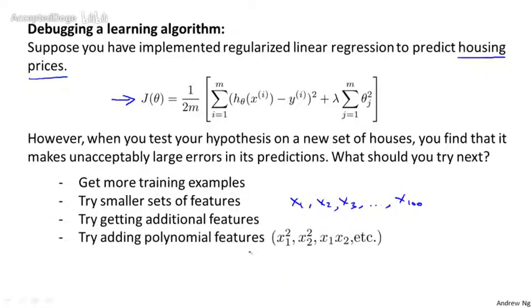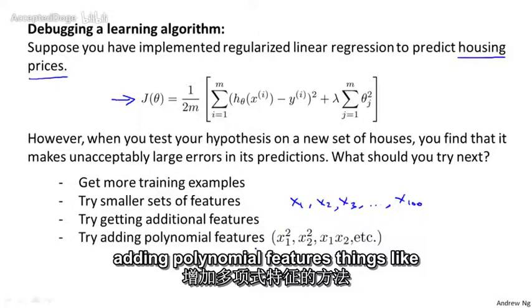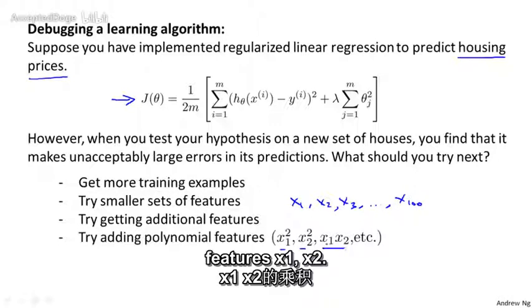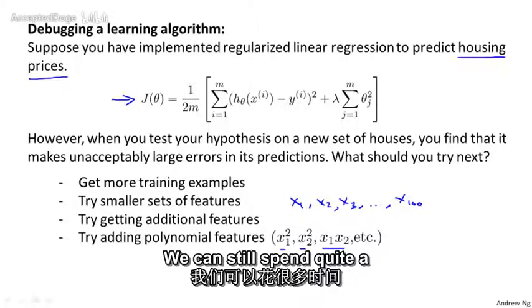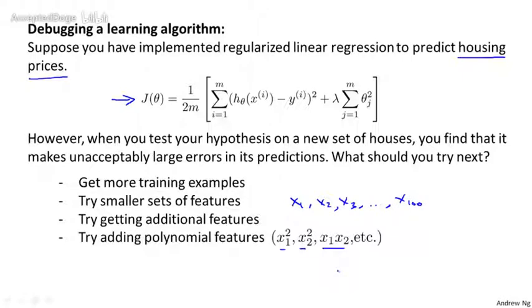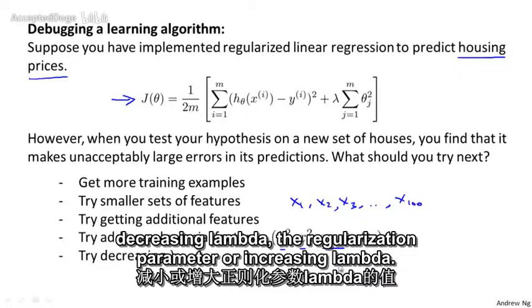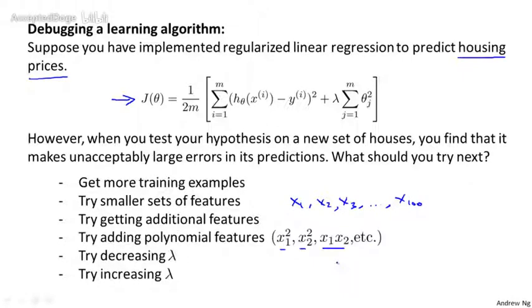We can also try adding polynomial features, things like x1 squared, x2 squared, and product features, x1, x2. We can still spend quite a lot of time thinking about that. And we can also try other things like decreasing lambda, the regularization parameter, or increasing lambda.